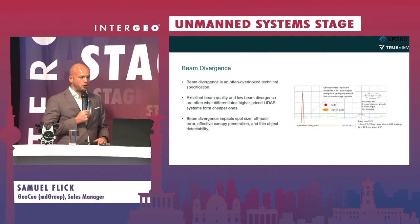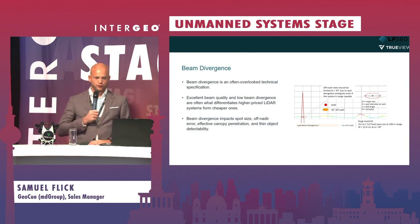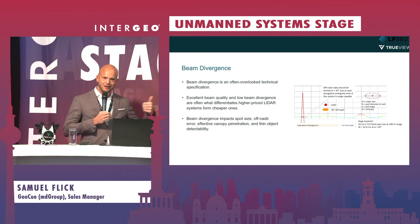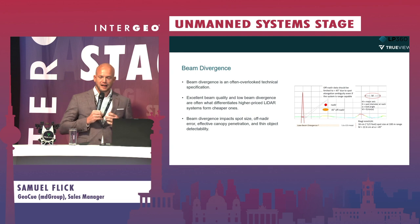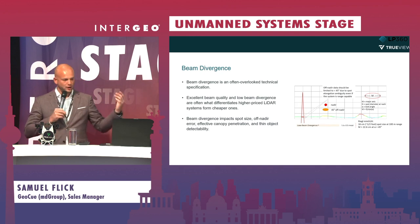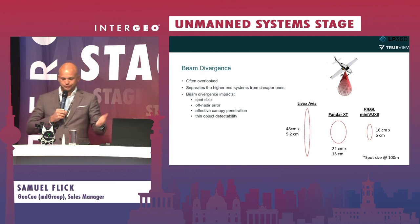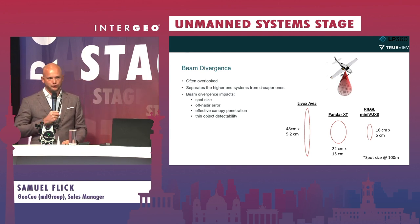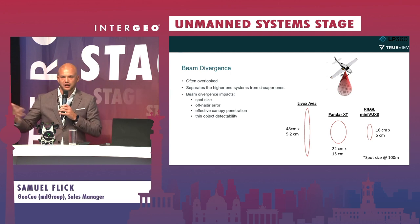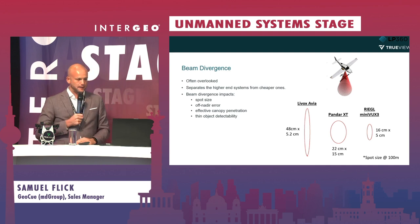Beam divergence describes how much the laser beam spreads on the ground depending on flight height. A high-quality LiDAR like Leica will have very tight beam divergence; lower-quality sensors spread more. On flat surfaces this may not matter much, but on edges and fine details, a large beam footprint — say 22 or 48 centimeters — makes it difficult to determine exactly where the edge is, rather than estimating. So beam divergence is also worth evaluating when purchasing a LiDAR sensor.